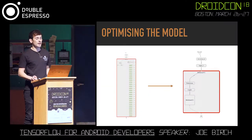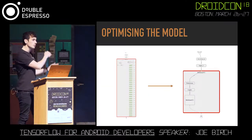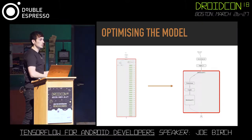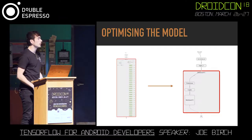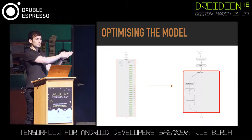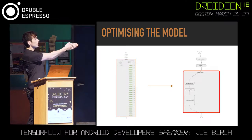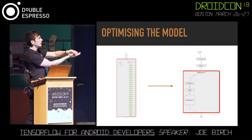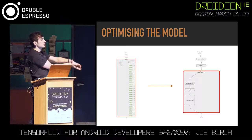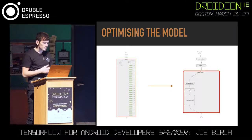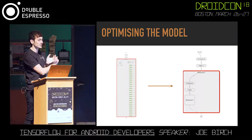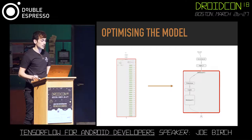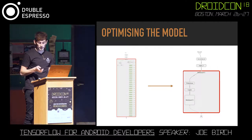Going back to TensorBoard after optimization — it has a dropdown menu to switch between different graphs. Looking at the before and after: the left-hand side is before optimization and the right-hand side shows the graph compressed. This is where our speed increases come from. It makes our graph less intimidating and easier to understand, with the same components but without the unrequired parts.